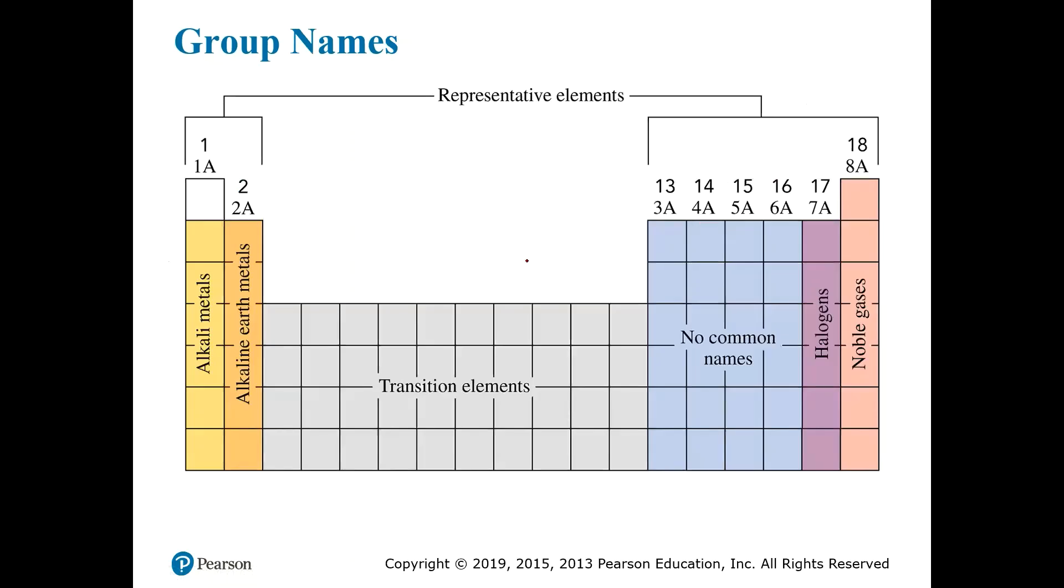Here we see what we're talking about as far as the group numbers. This is a blank periodic table. This first group over here is the alkali metals. This is group one in the new system or in the old system it was 1A. Right next to it you have group 2A in the old system or 2 in the new system. In the old system you counted for the representative elements in A, so you went from 1A to 2A and then you skipped all the way over here to 3A. These are the other groups of representative elements: 3A, 4A, 5A, 6A, 7A, 8A.